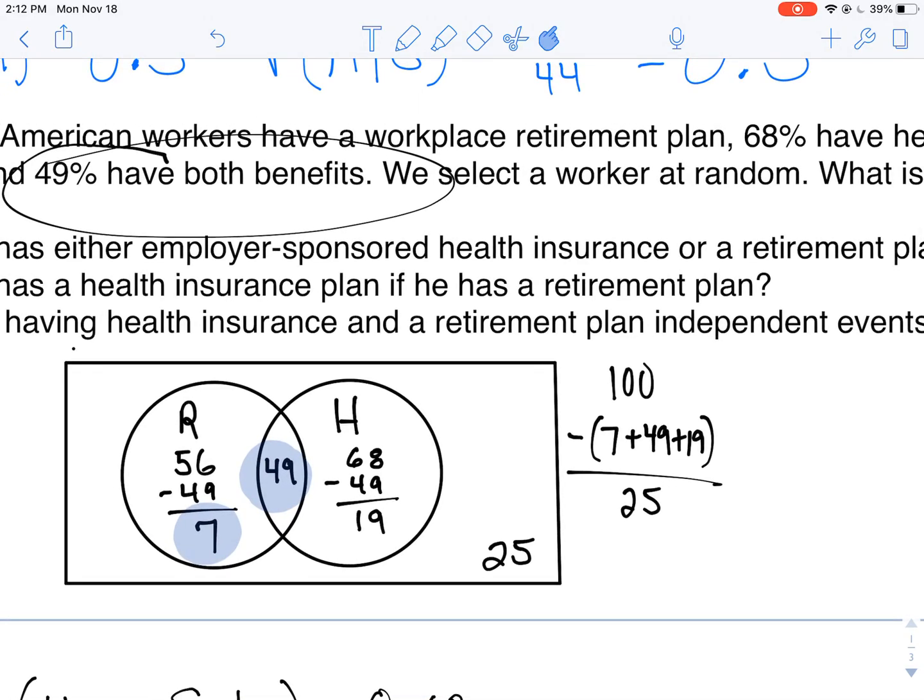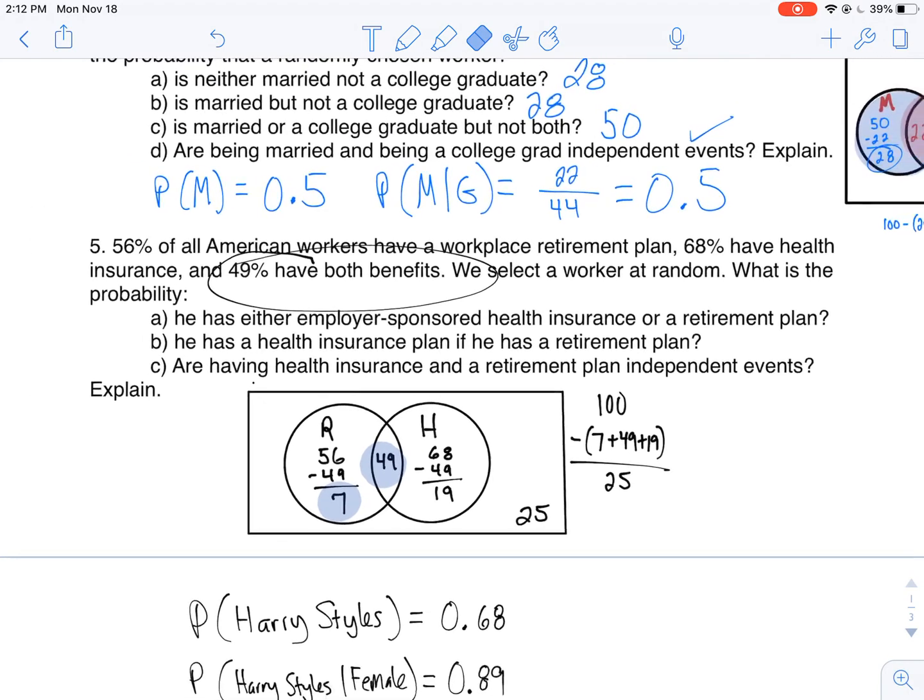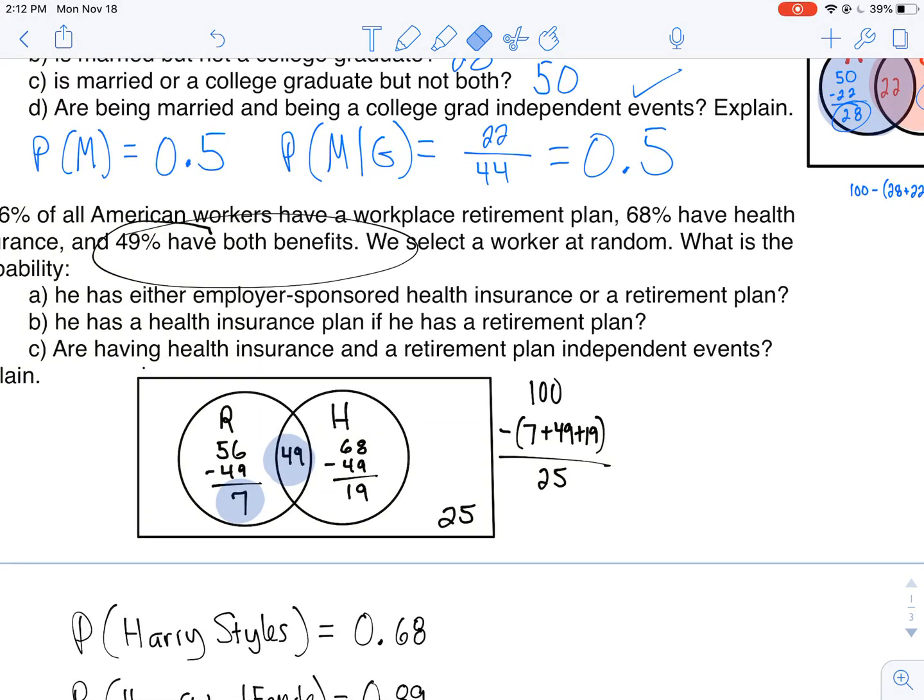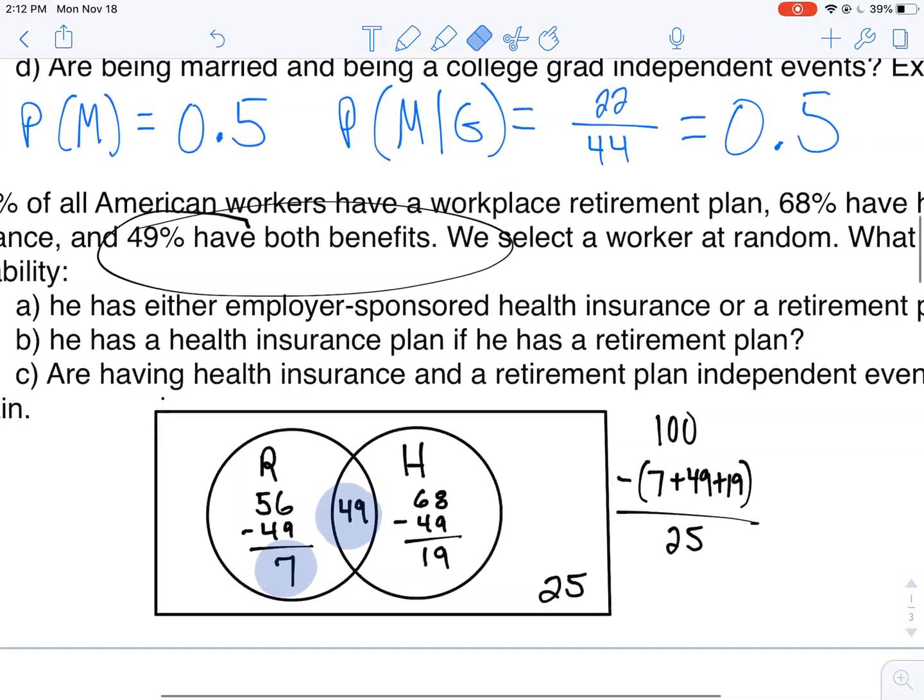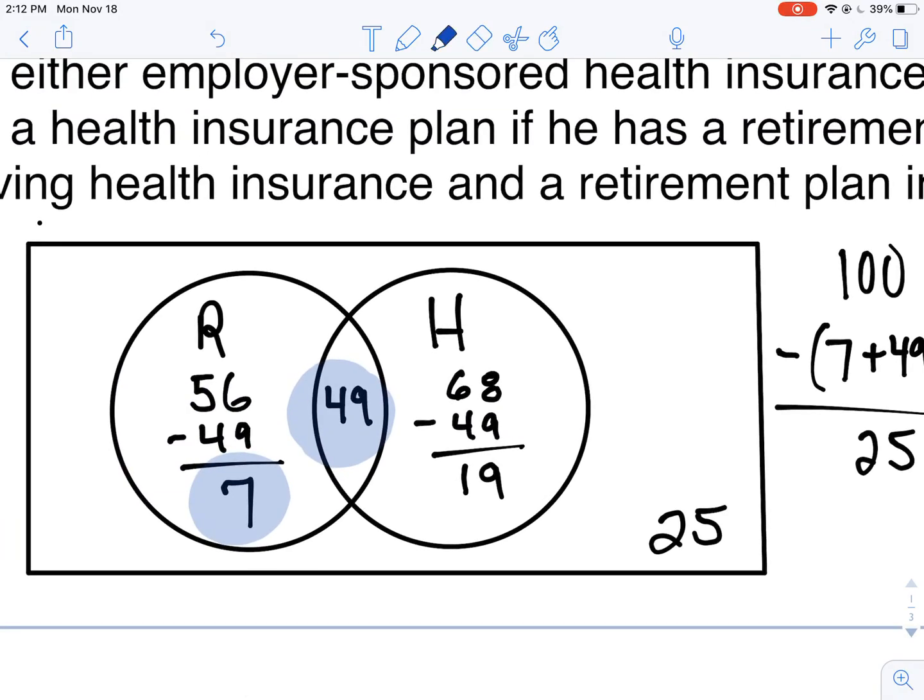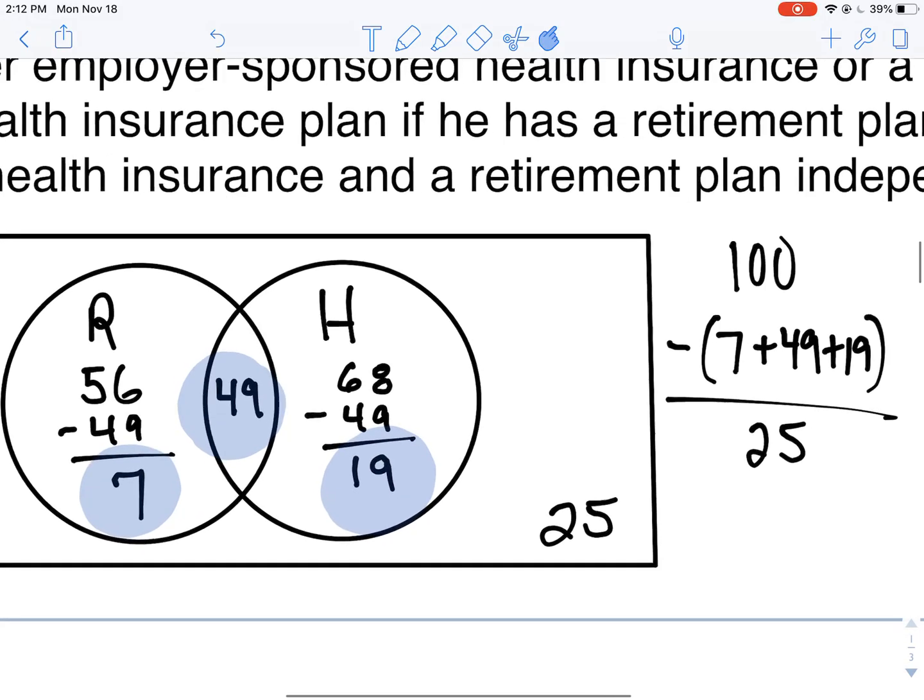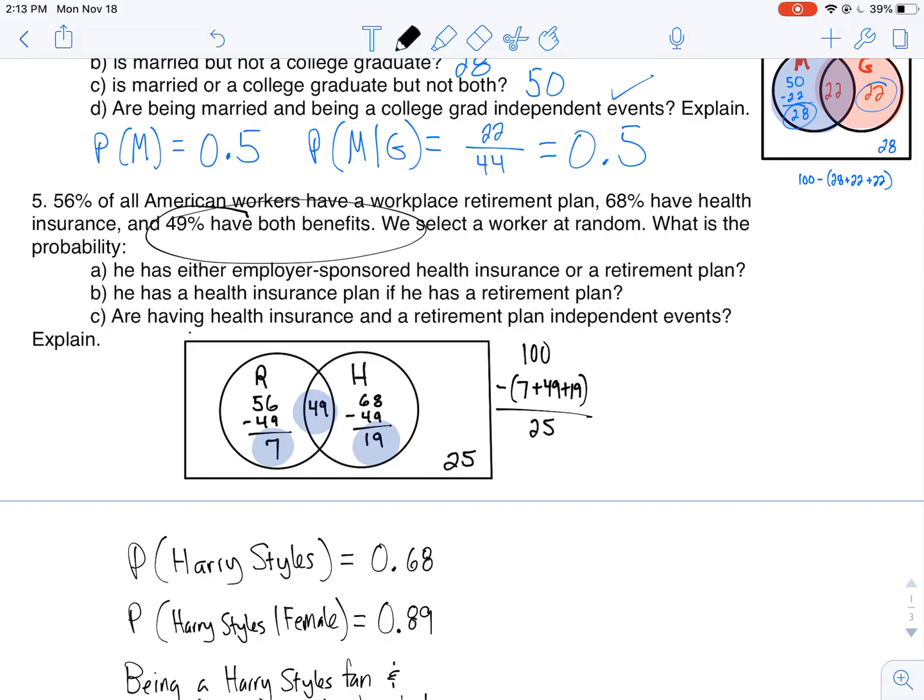So now I've filled in the Venn diagram, I can work with this. First question: has either employee-sponsored health insurance or retirement plan. So it says either, and that could be this or this or this. So what I'm gonna do is include everything in these circles. That would mean if I add up everything here, I'm gonna get 75.